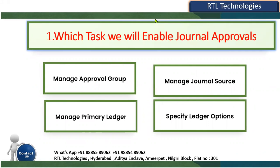Approval management is very important — in Financials, Supply Chain Management, and Human Capital Management, we use approvals everywhere. In Financials specifically, we use approvals for invoices, supplier and customer transactions, payments, and journals. The options are: Manage Approval Group, Manage Journal Source, Manage Primary Ledger, or Specify Ledger Options.